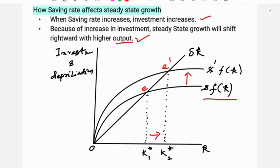Saving is a virtue for an individual but a vice for a nation. If you are saving more, then consumption is less. If consumption is less, production and demand are also less. So although the saving rate is greater, consumption is less, and capital will reach the best level that maximizes consumption at steady state — that is the golden level of capital.